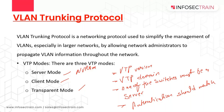In client mode, switches only learn and pass VTP summary advertisements to other switches — configurations will be deleted if the switch is reset or reloaded. In transparent mode, the switch only forwards VTP summary advertisements through trunk links. Transparent mode switches can maintain their own local VLAN database kept secret from other switches, but the whole purpose is to forward the VTP summary advertisements without taking part in VLAN assignments.